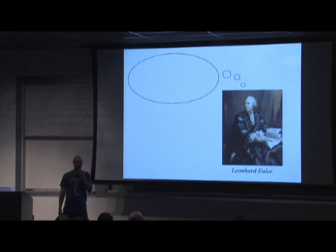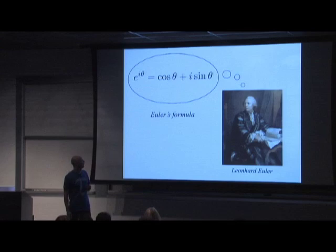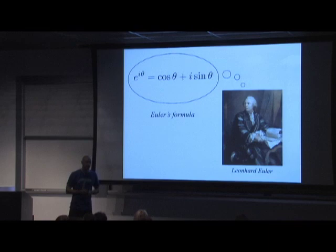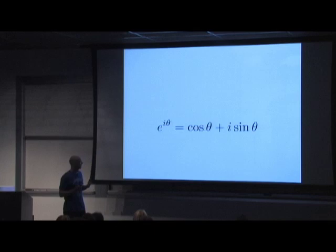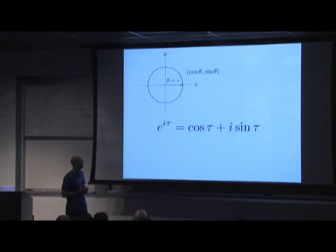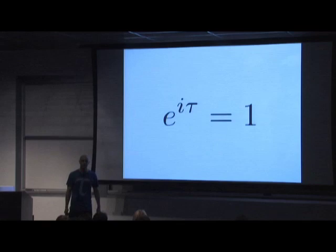Euler's identity is named after Leonard Euler, one of the greatest mathematicians of all time. He came up with Euler's formula: e^{iθ} = cosθ + i sinθ. It's remarkable that there's a natural relationship between complex exponentiation and the circle functions. If we evaluate Euler's formula at τ, we get e^{iτ} = cosτ + i sinτ. From the unit circle, θ = τ gives cosτ = 1 and sinτ = 0. So we end up with e^{iτ} = 1. In other words, the complex exponential of the circle constant is unity.